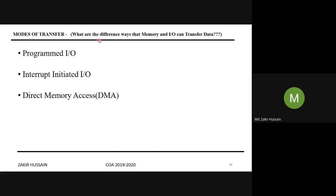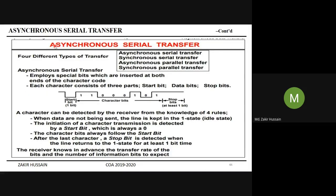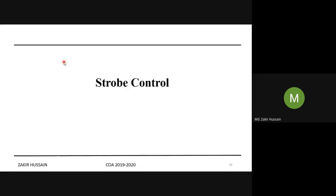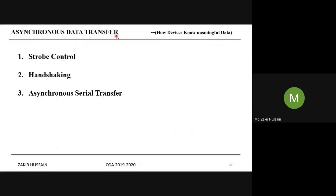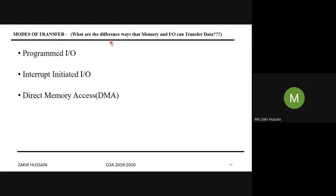This topic covers modes of transfer — the different ways that memory and I/O devices can transfer data. Earlier we saw something called synchronous data transfer. Some curious students may have confusion because the word 'transfer' appears in multiple contexts: in synchronous data transfer, and also in the modes of transfer topic itself.